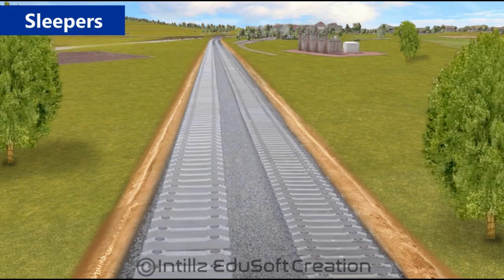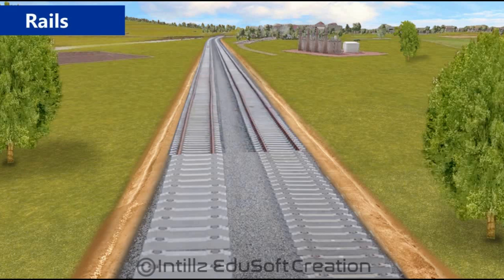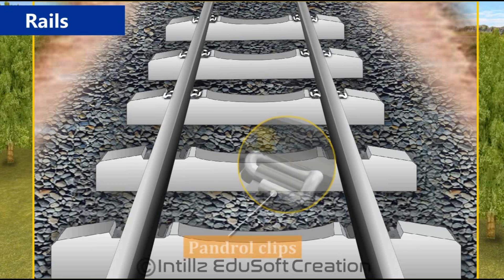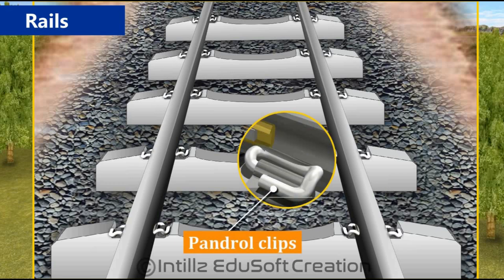Once the PSC sleepers are laid, depending upon the density, the rails are laid on the sleepers. The rails are fixed to the sleepers through a clip called pandrol clips. These clips not only hold the rail, but also will not allow the rail to move during train movement.